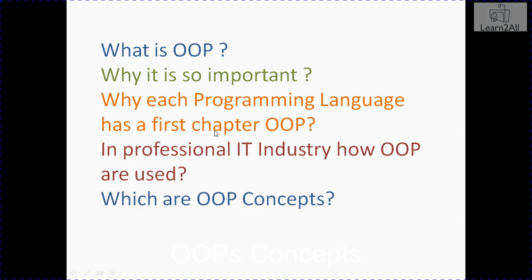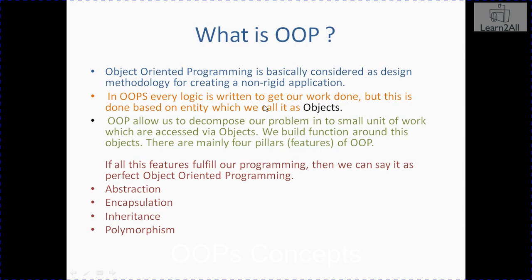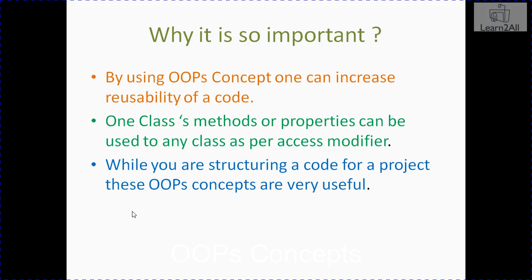We will also discuss how object oriented programming is so useful in the professional IT industry, and which are the OOP concepts. Now we will first discuss what is object oriented programming. The main paradigm of object oriented programming is class and object. We will discuss what is class and what is object in our next video tutorials. It has four pillars: abstraction, encapsulation, inheritance, and polymorphism.